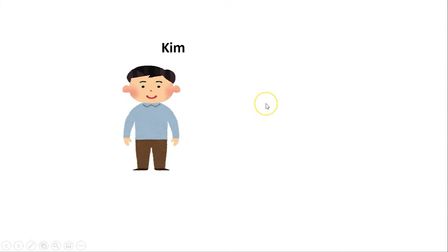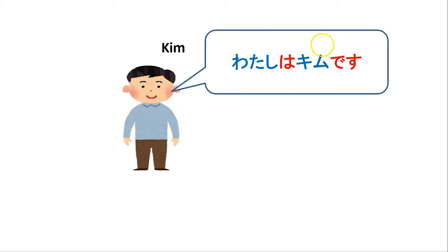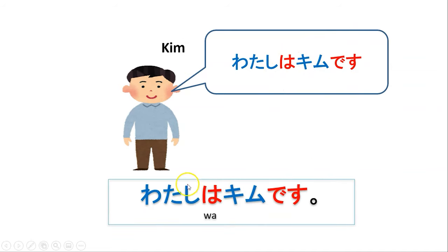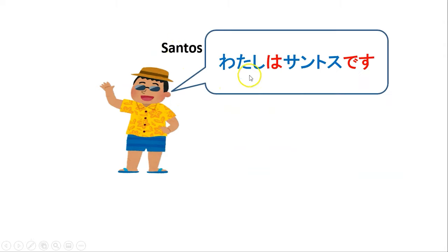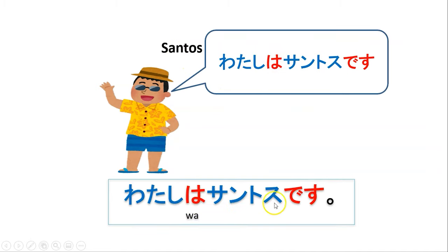What if yung pangalan ko naman is Kim? Gusto ko muna ng Japanese sentence na 'Ako si Kim' — 'I am Kim.' Watashi wa Kimi desu. Sana familiar na kayo sa hiragana at katakana. Pwede rin maging Santos yung pangalan ko — Watashi wa Santos desu.